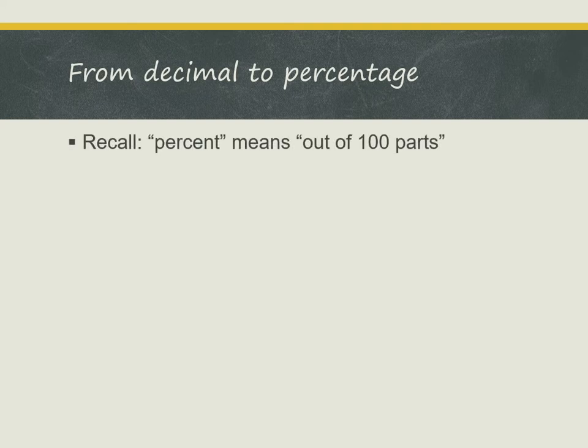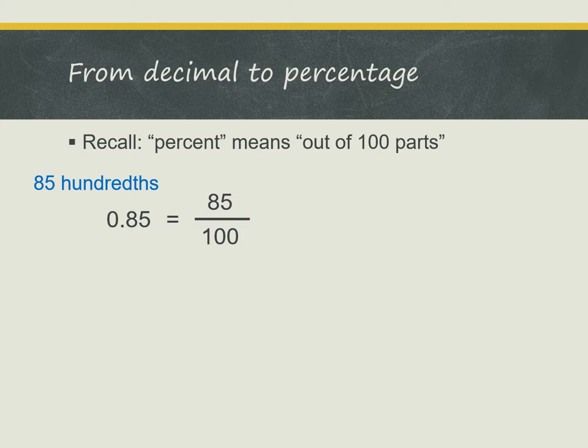Recall that percent means out of 100 parts. So if we have a decimal such as 0.85, we can say it as 85 hundredths. And 85 hundredths, when written as a fraction, is 85 out of 100. Then we can convert it directly to a percentage and we get 85%.